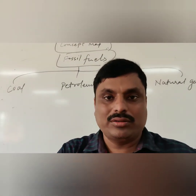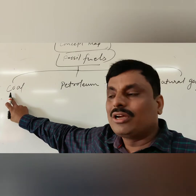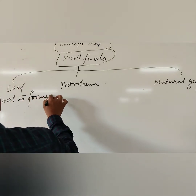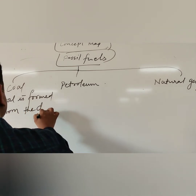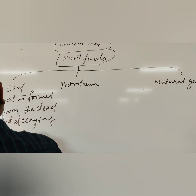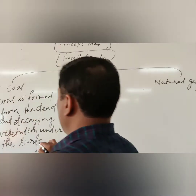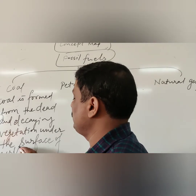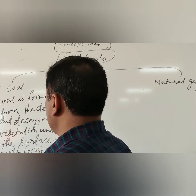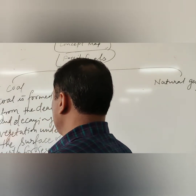What is coal and how is it formed? Coal is a carbon compound. It is formed from dead and decaying vegetation buried under the surface of the Earth for several million years under high temperature and pressure.